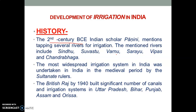The next most important milestone in irrigation was in the medieval period. The most widespread irrigation system in India was undertaken by the Sultanate rulers and the British Raj. By 1940, they had built a significant number of canals and irrigation systems in Uttar Pradesh, Bihar, Punjab, Assam, and Orissa. This irrigation progress was made up till 1947.